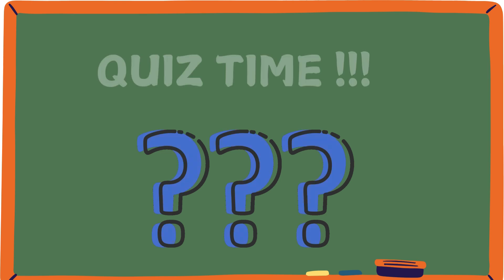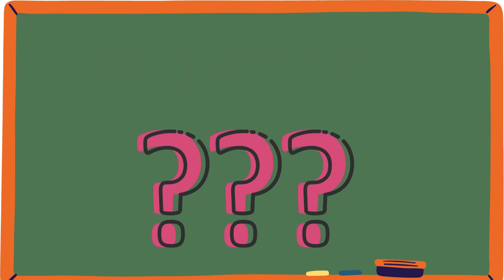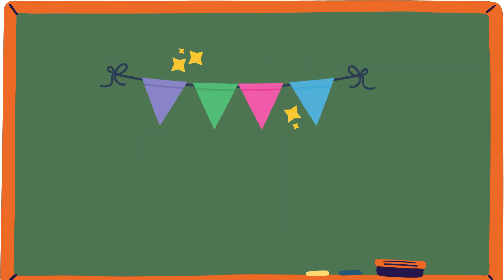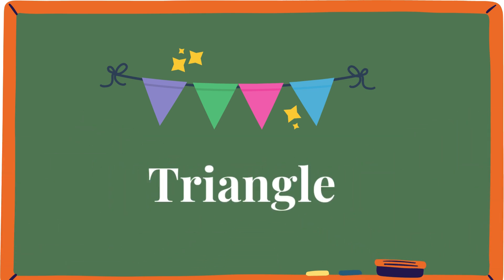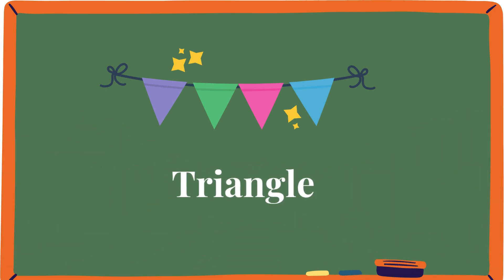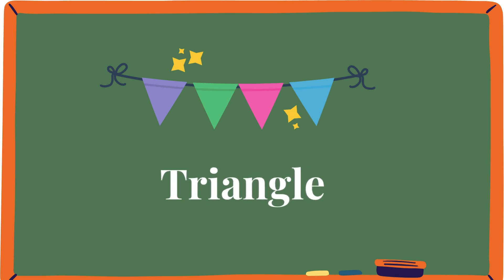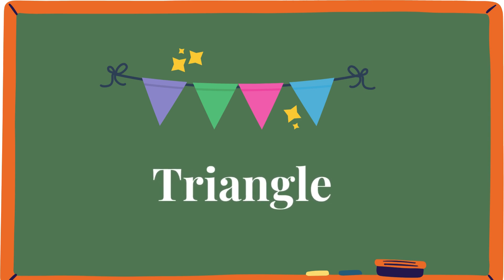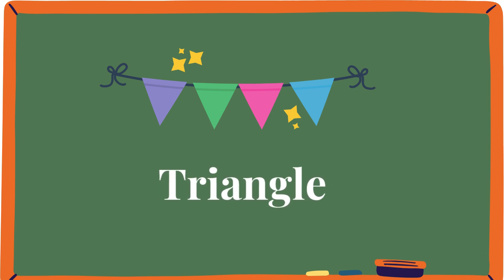Okay guys, you ready? It's quiz time! What shape is the party banner? If you said triangle, you are correct. As you can see, the party banner has three sides.